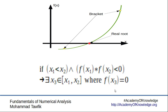This is the definition of a root. So if this is true, then there exists some point x₃ where f(x₃) equals zero. Bracketing methods search for this value x₃ by different methods.